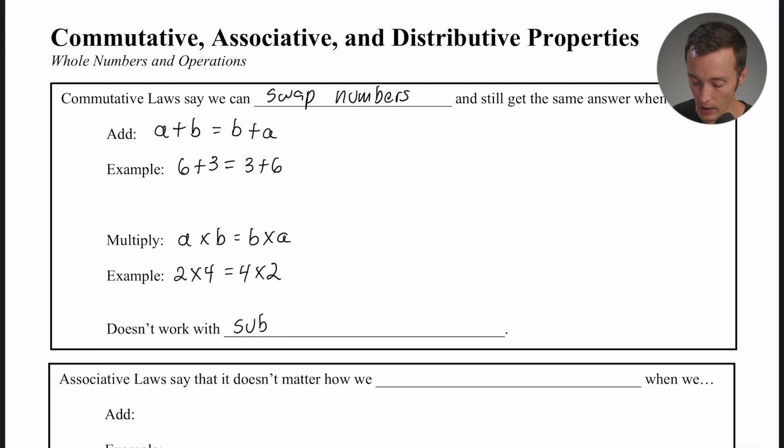Now it's worth mentioning that this doesn't work with subtraction and it also doesn't work with division. So you can do this swapping out for addition or multiplication, and that's an example of the commutative property or commutative laws.